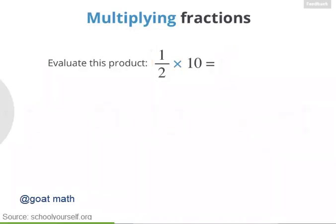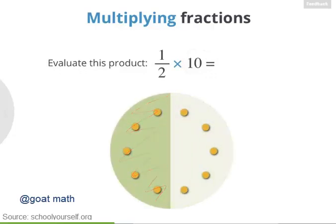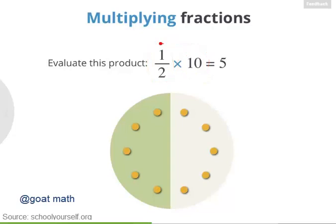Here's another way to think about it. Instead of having 10 of the half dots, we can have one half of 10 dots. Here's a group of 10 dots — counting only this half of them, how many dots do we have? Half of 10 is 5. So when you're multiplying one half by 10, you can think of it as 10 halves or as one half of 10. Either way, you'll get 5.